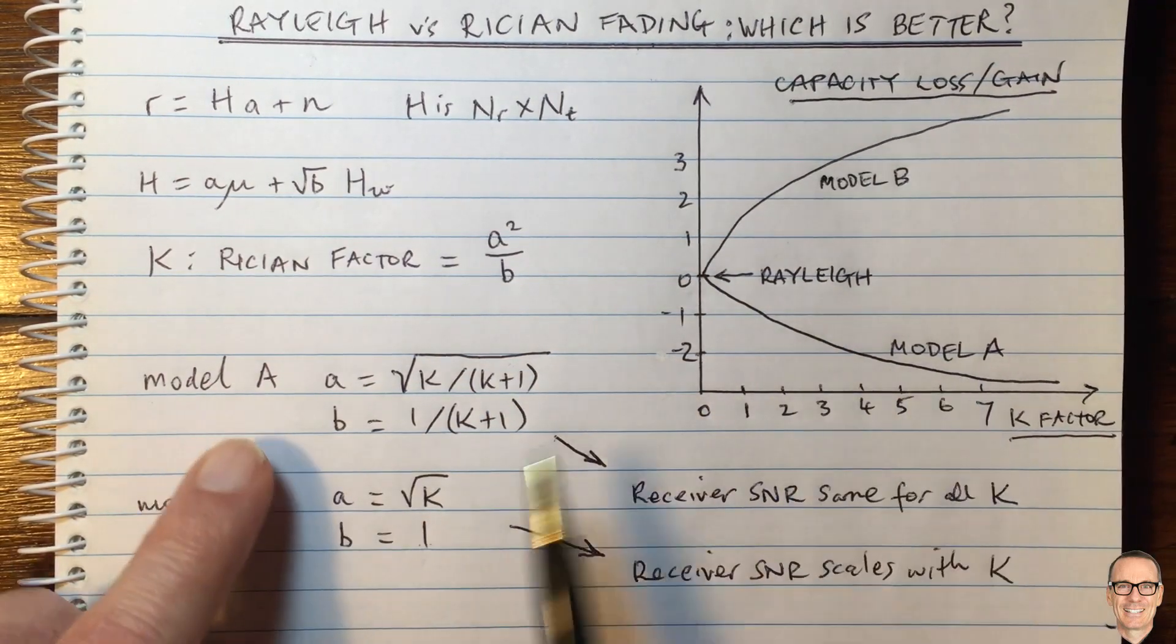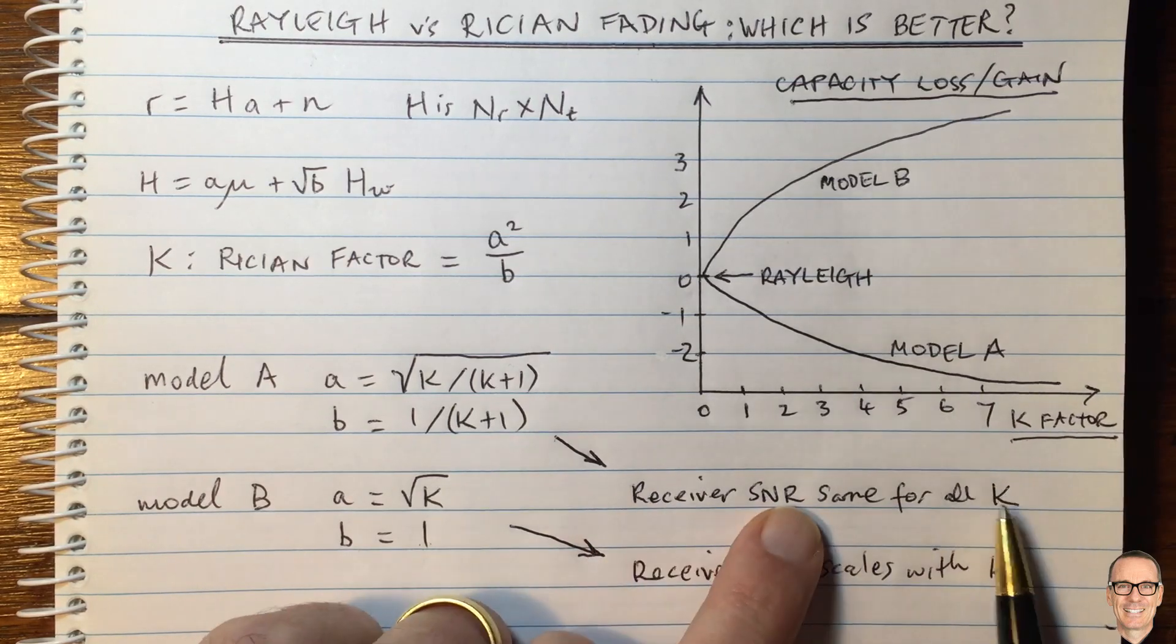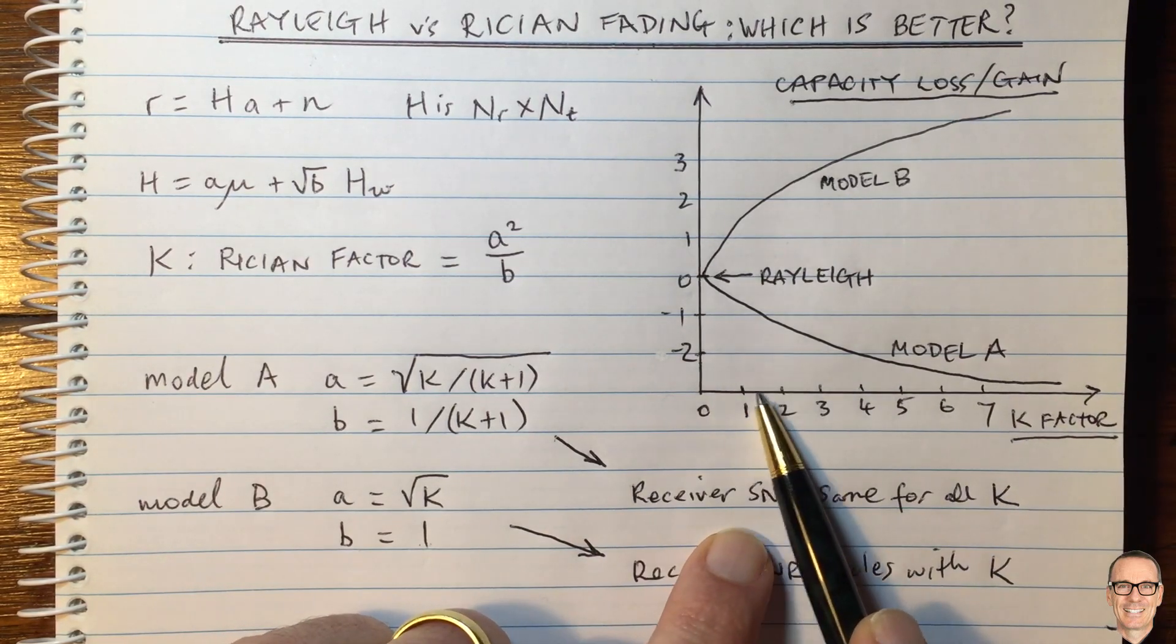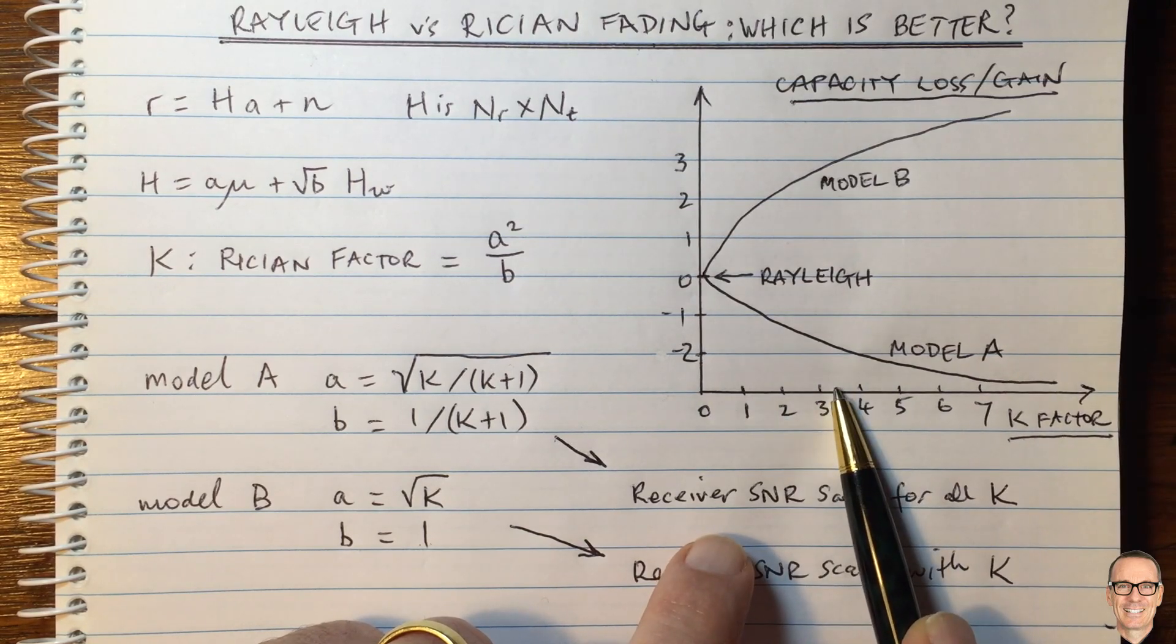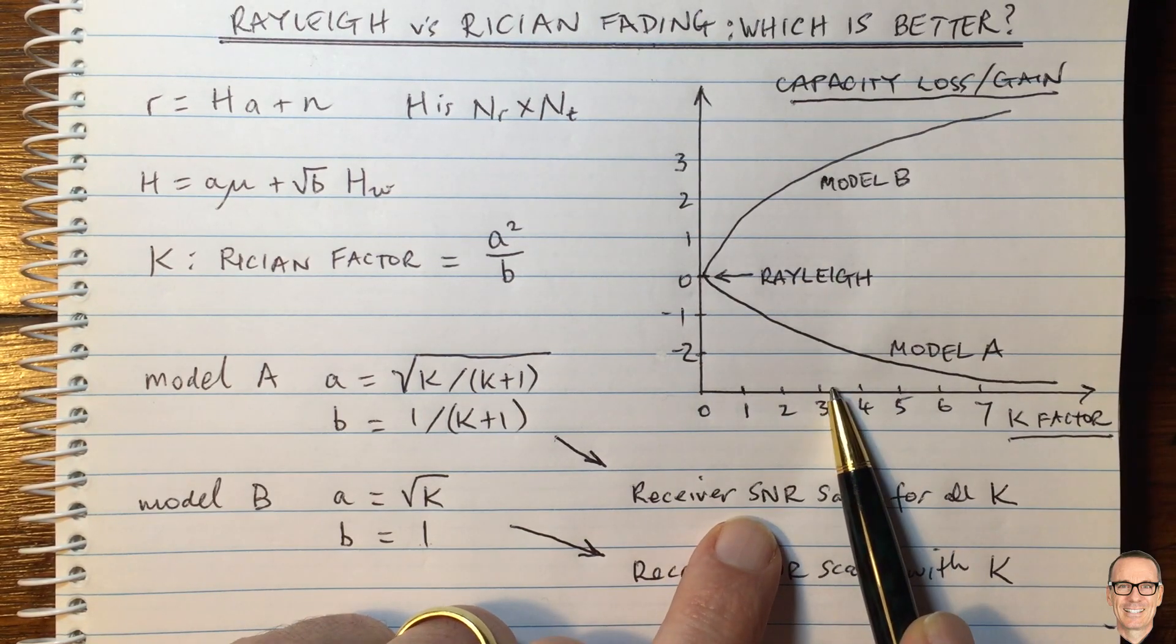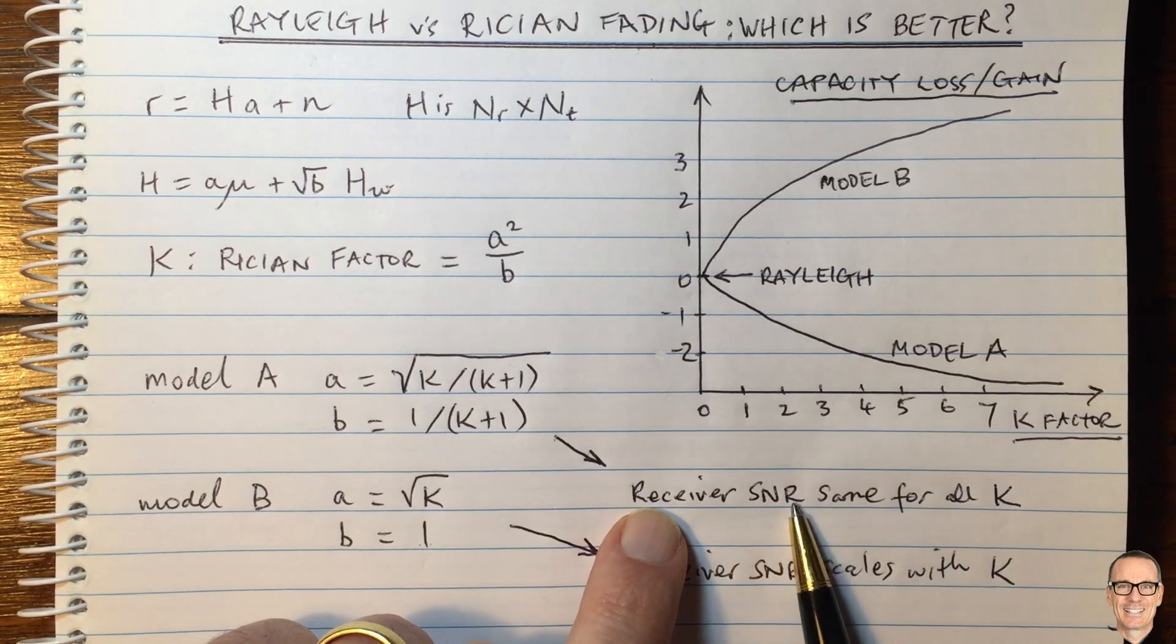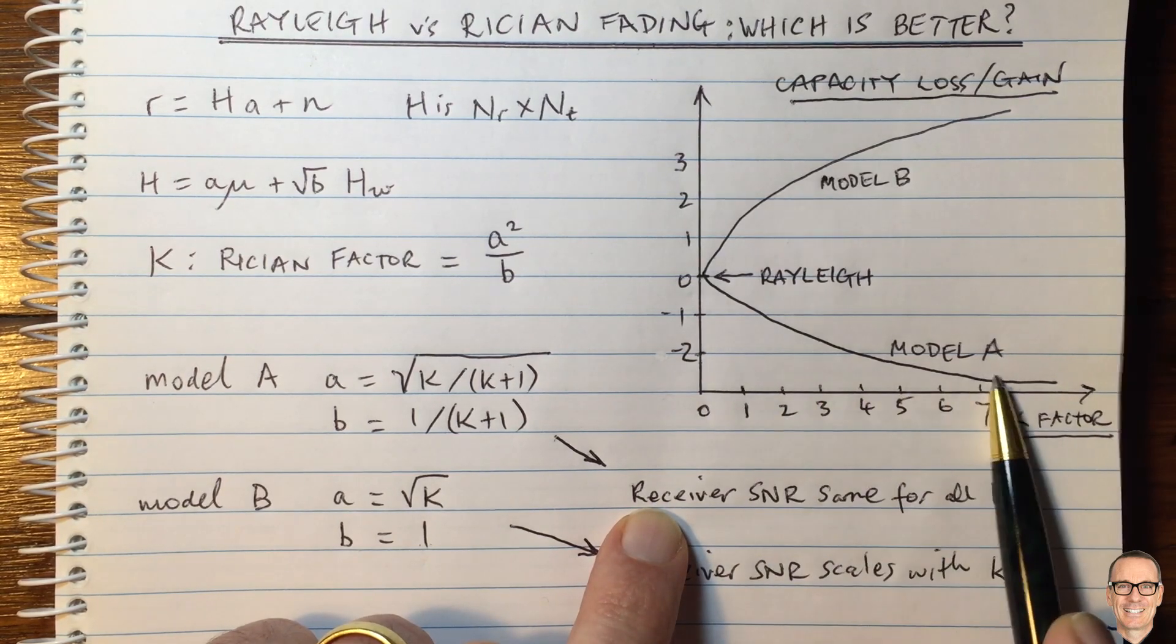So as the K factor goes up, under model A, where the receiver SNR is the same for all K, as the K factor goes up, there's more energy in the dominant path and less in the reflective paths because the receiver SNR remains the same as you move along this curve.